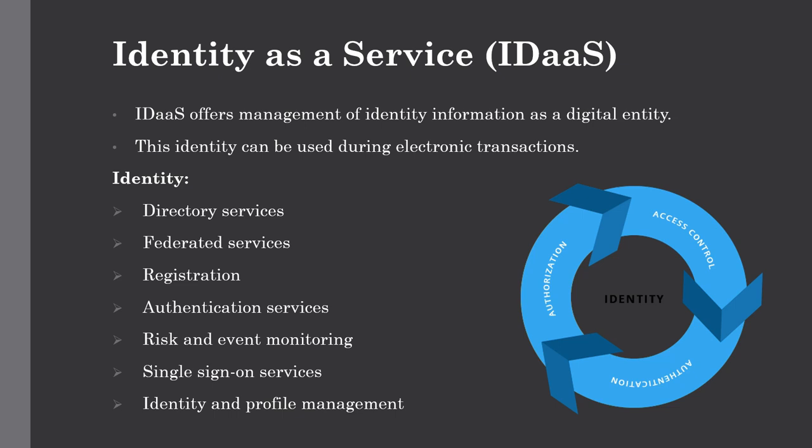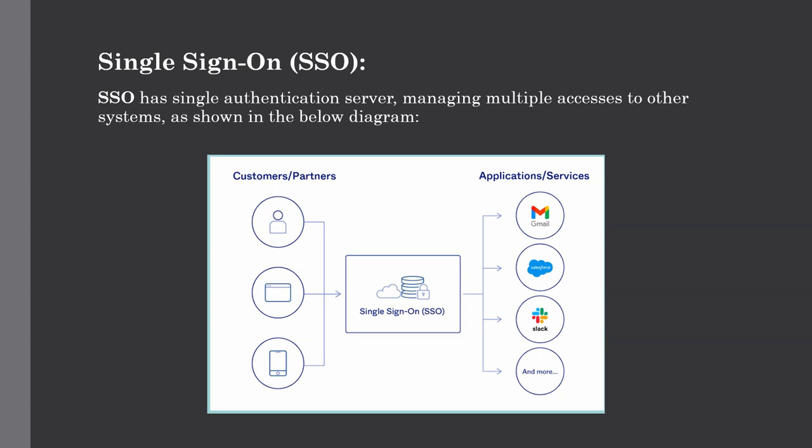We will now talk about Single Sign-On service, also called SSO. To solve the problem of using different username and password combinations for different servers, companies employ a single sign-on software which allows the user to log in only one time and manage access to other systems. For example, if you are an employee who needs to connect with a colleague, check payroll, access the HR server, or schedule a meeting — earlier you would need to log into each application separately. But SSO has a single authentication server which manages multiple access to other systems, as shown in this figure. You don't need to remember credentials for all your accounts, making it very convenient to use.